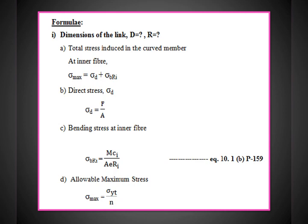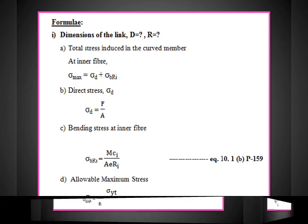The direct stress and bending load both cause tension at the inner fiber. Maximum stress induces at the inner fiber. Total stress: sigma = sigma_D + sigma_B(Ri) at the inner fiber (since direct stress and bending stress both add at the inner fiber). For the outer fiber: sigma = sigma_D − sigma_B(Ro), which reduces the stress. Since we design for maximum stress, we consider the inner fiber. Direct stress sigma_D = F/A.